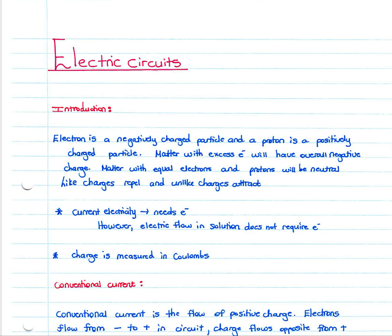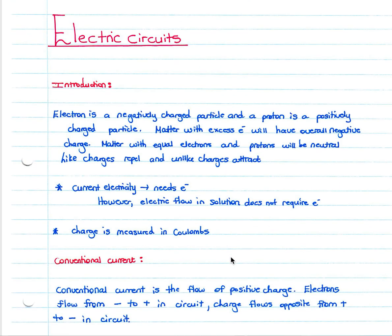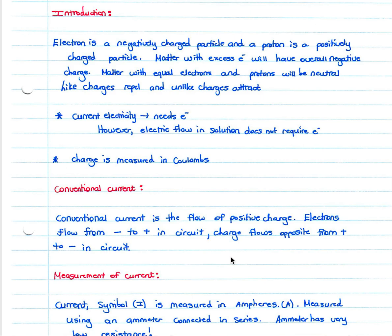Current electricity needs electrons. However, electric flow in solution does not require electrons. In a solution of ions, you will have a movement of current without the flow of electrons. Charge is measured in Coulombs.